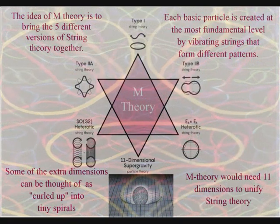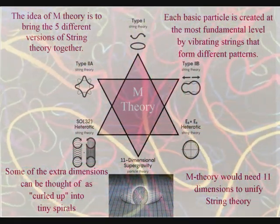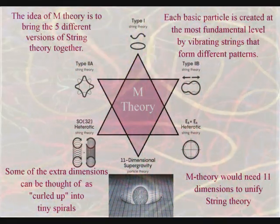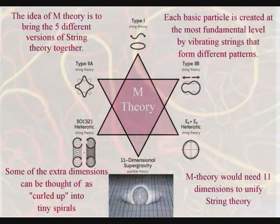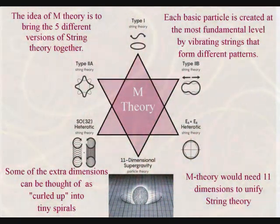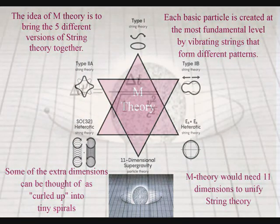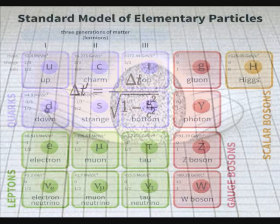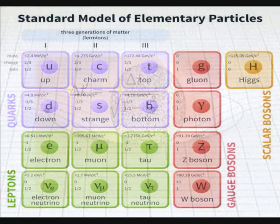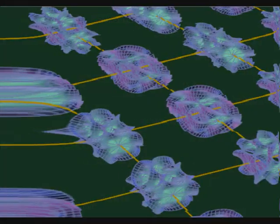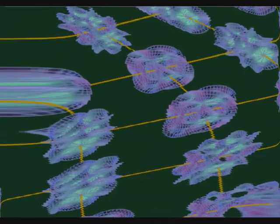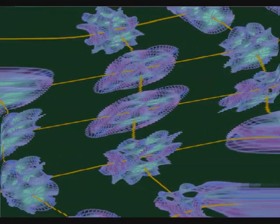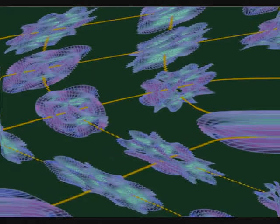M-theory should solve this problem. Although a complete formulation of M-theory has not yet been formulated, it should provide a framework for a model of the real world that combines general relativity with the standard model of particle physics. In such a theory, each basic particle is created at the most fundamental level by vibrating strings that form different patterns.